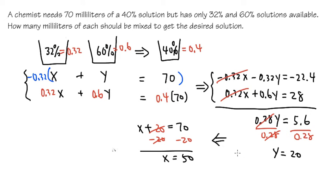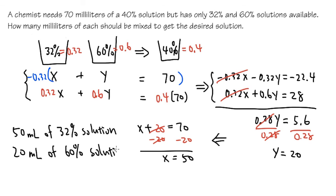Alright, so we solved our system of equations. We know x is 50 and y is equal to 20. But then, we must answer the question according to the story. So what does the x stand for, right? We know x is 50. Well, if you look back to the picture, x is the amount of the milliliters that we have to use for the 32% solution. So I'm going to write it down this way. This is how we are going to answer work problems. We are going to have 50 milliliters of the 32% solution. And how about the 20? 20 is the 20 milliliters for the 60% solution. So let me just write this down. 20 milliliters of the 60% solution. And this is how we answer work problems.